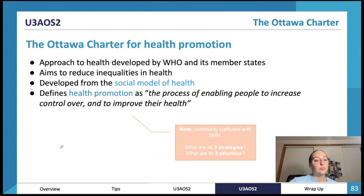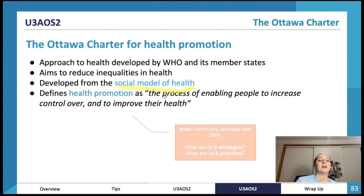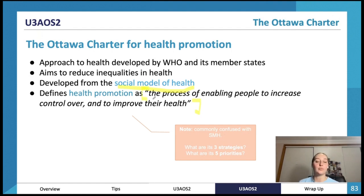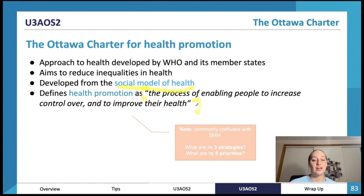The Ottawa Charter for Health Promotion is an approach developed by the World Health Organization. It's aimed to reduce inequities in health and was developed from the social model of health. It defines health promotion as 'the process of enabling people to increase control over and improve their health.' It's commonly confused with the social model of health, but the Ottawa Charter has three strategies and five action areas. When you see quotation marks, it's a proper WHO definition — try to memorize it rather than paraphrase.